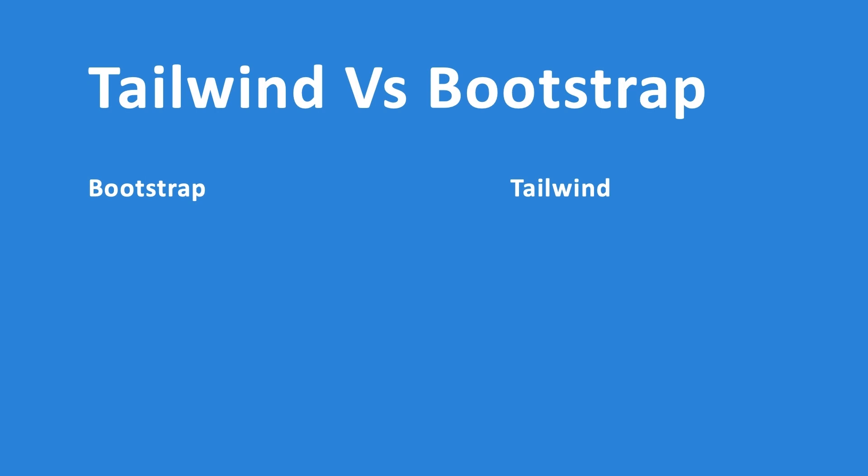There is a big difference between Tailwind and Bootstrap. Whenever you write Bootstrap, you're using class names that describe how they're going to be used — names such as container, row, col, card. It's a little bit different in Tailwind since you're creating a single styling for a specific element.